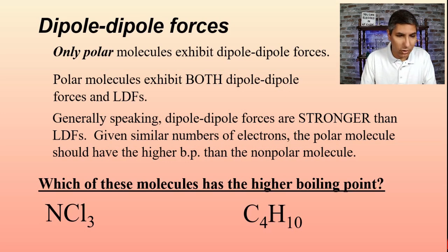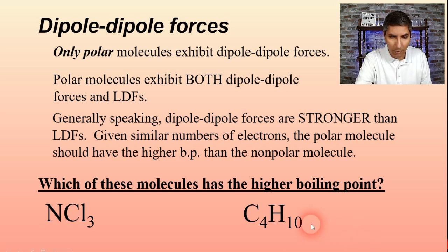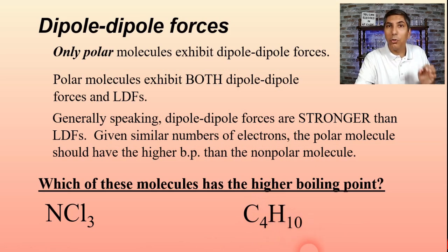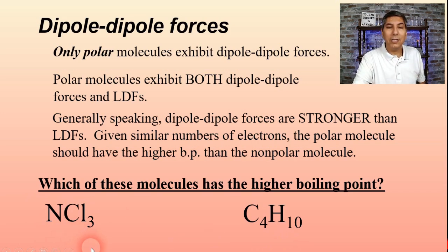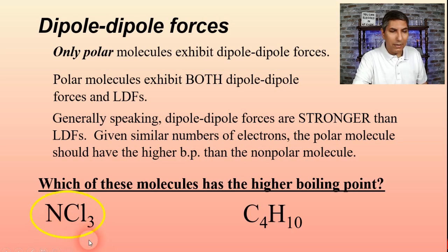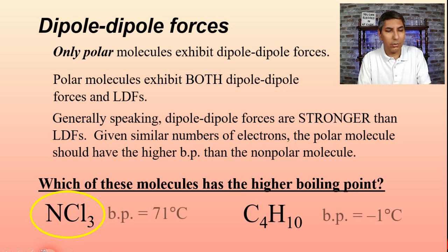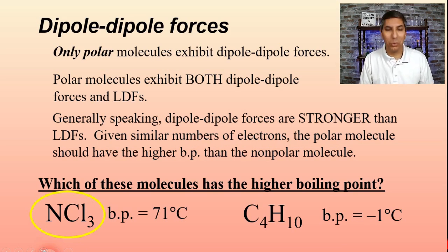Let's look at this question: which of these molecules has the higher boiling point — nitrogen trichloride (NCl3) or butane (C4H10)? C4H10 is a non-polar molecule, so it only exhibits London dispersion forces. NCl3, if you draw it out, is a polar molecule, so it has both London dispersion forces and dipole-dipole forces. We'd expect NCl3 to have the higher boiling point — and it does, at about 71°C compared to negative 1°C for butane.